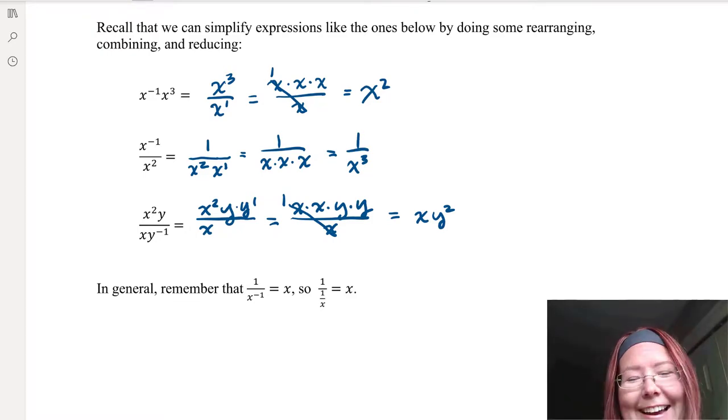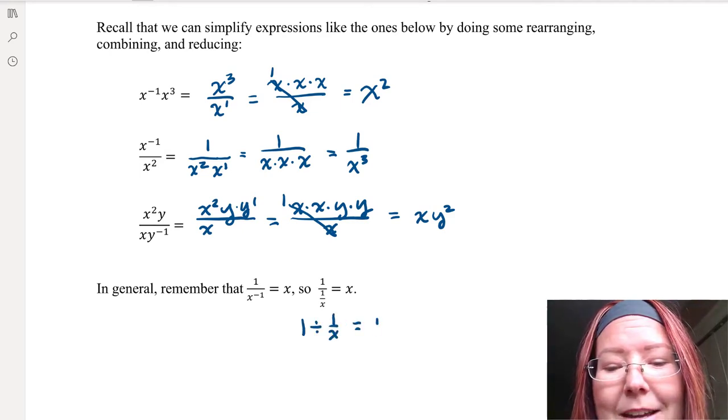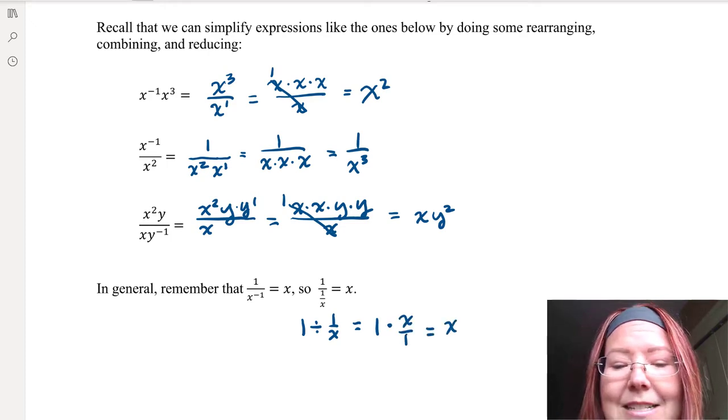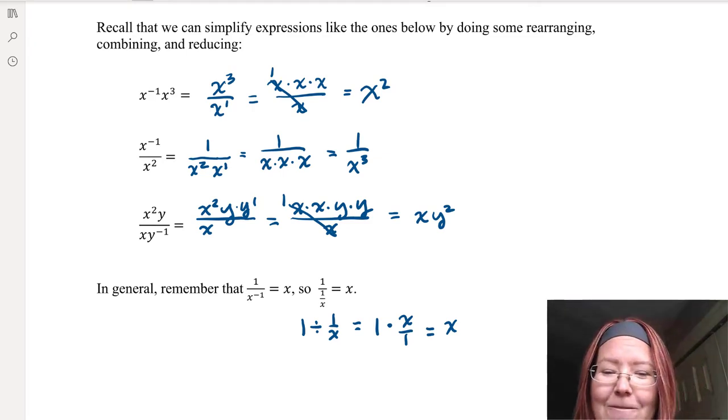That's just a reminder on how things can move around. Another good reminder is that when we write something like one over x to the negative first, what we're really writing is one over one over x. That's the same thing as one divided by one over x, which is the same thing as one times x over one, which is the same thing as x. That's why one over x to the negative first becomes x. We're going to use that as we move into trig reciprocal functions.